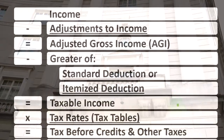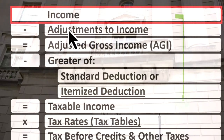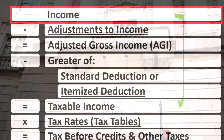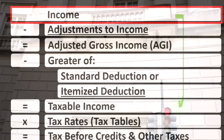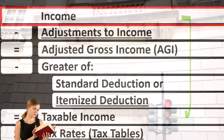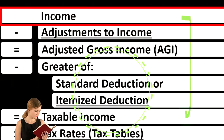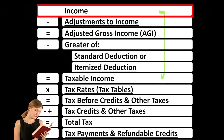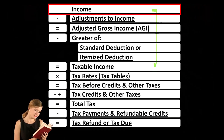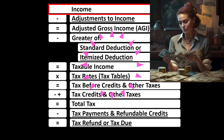Looking at the income tax formula, we're focused on line one income, remembering that the first half of the income tax formula is in essence an income statement — just an outline, just a scaffolding — with other forms and reports flowing into it. For example, the Schedule C, the business income, which is in essence an income statement having income and expenses, otherwise known as business deductions, getting to the net income that would flow into the income line of our income tax formula.